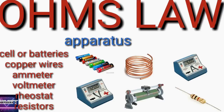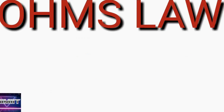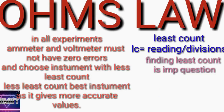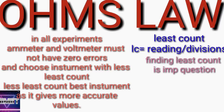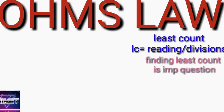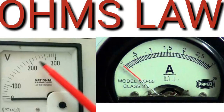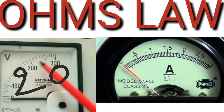Coming to the apparatus: we use cells or batteries, copper wires, ammeter, voltmeter, rheostat, and resistor wires. In all experiments, remember — when doing the experiment, ammeter and voltmeter should not have any zero errors. Whichever instrument has the least count, that is the best instrument, because less least count means the value will be more accurate. The least count formula is: reading divided by number of divisions.